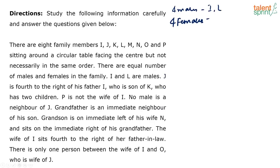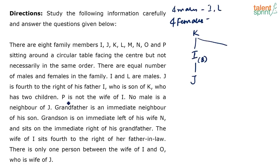J has a father, I — so J is a boy. I is the son of K, who has 2 children — I and one more person. Then, P is not the wife of I. And no male is a neighbour of J — I'll note that for later. Grandfather is an immediate neighbour of his son.